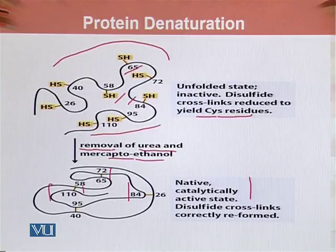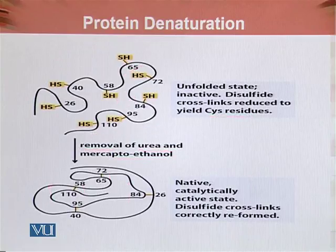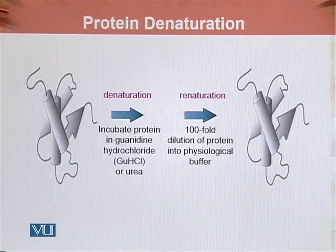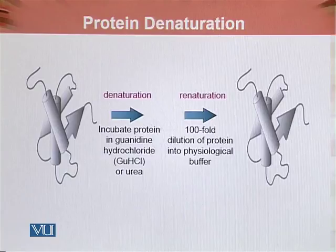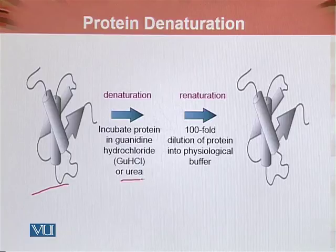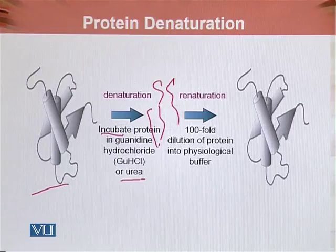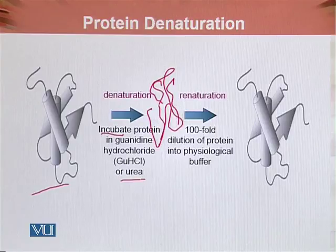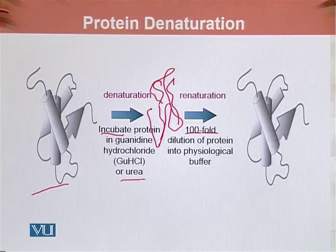This again presents the denaturation and renaturation process. When a protein structure is incubated in urea, it takes on a misfolded, bizarre appearance — its structure is misfolded. If we then remove the urea through 100-fold dilution into a physiological buffer, the protein will also be re-natured, regaining its proper conformation.